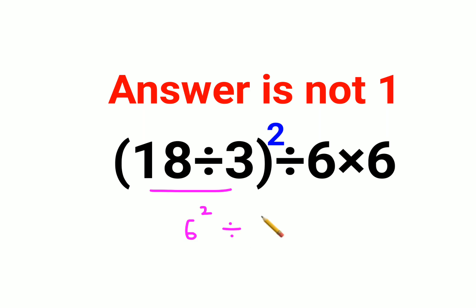6 squared divided by 6 times 6. So 6 squared is basically 36 divided by 6 times 6.